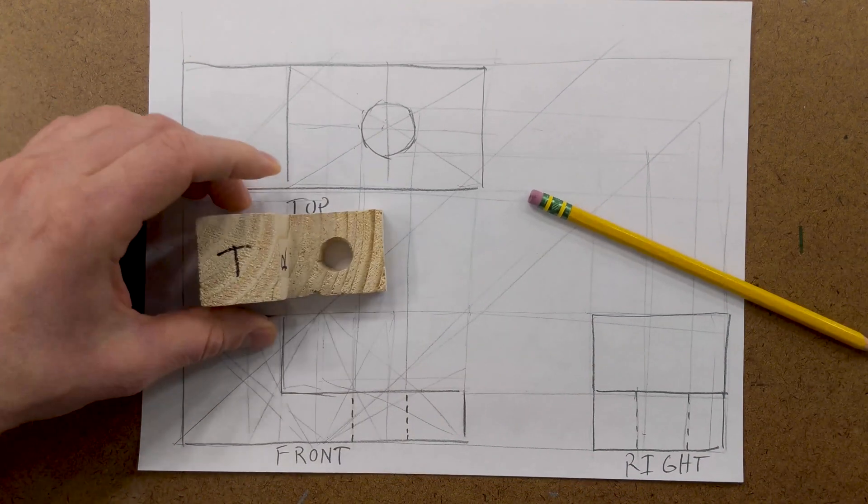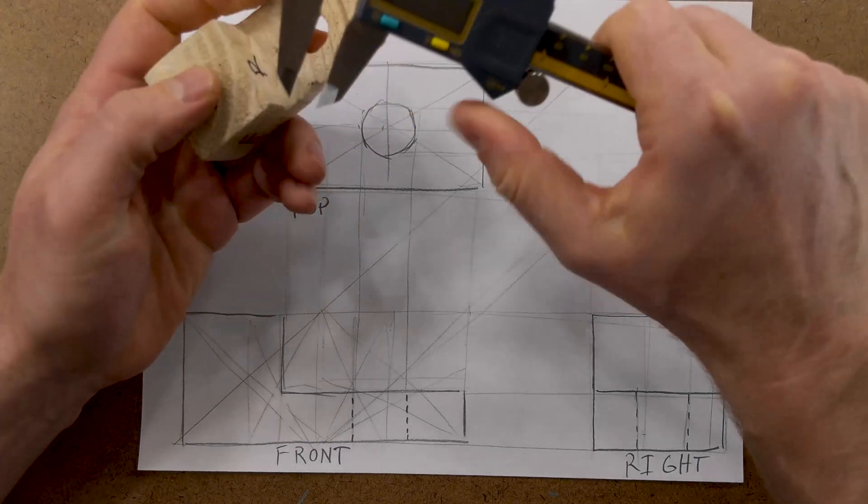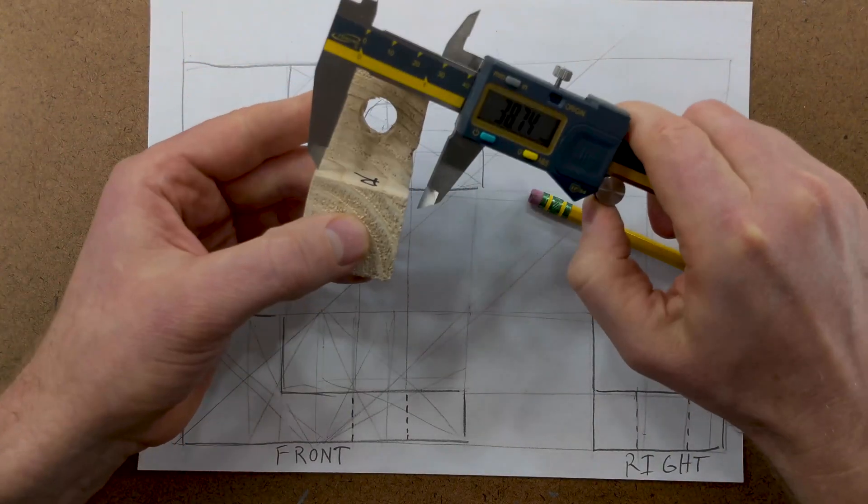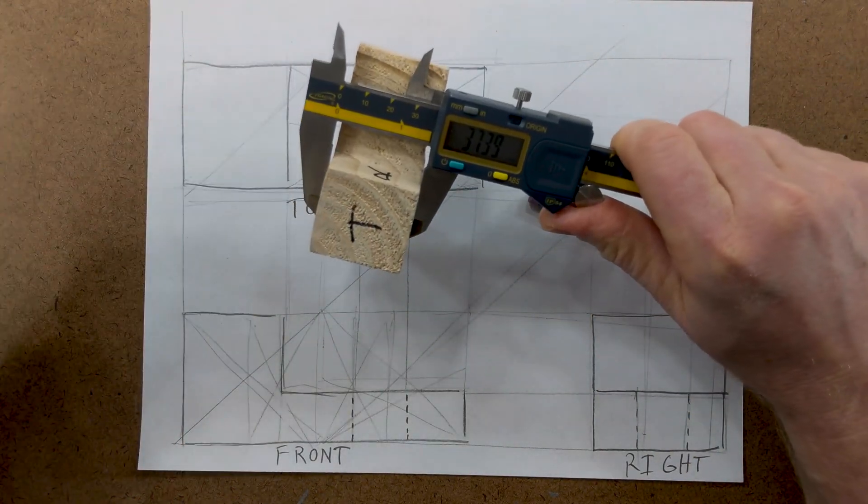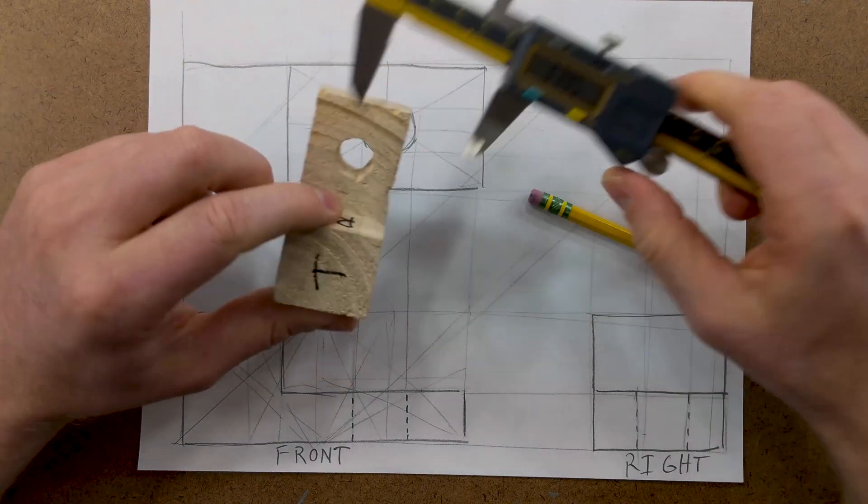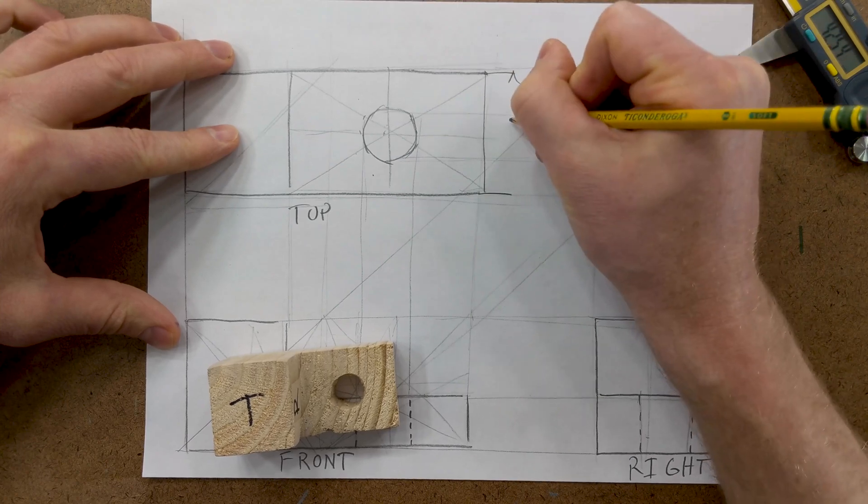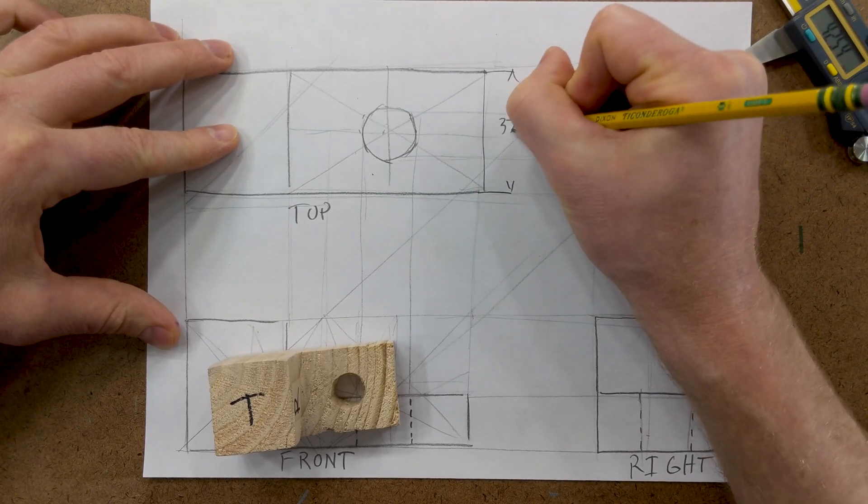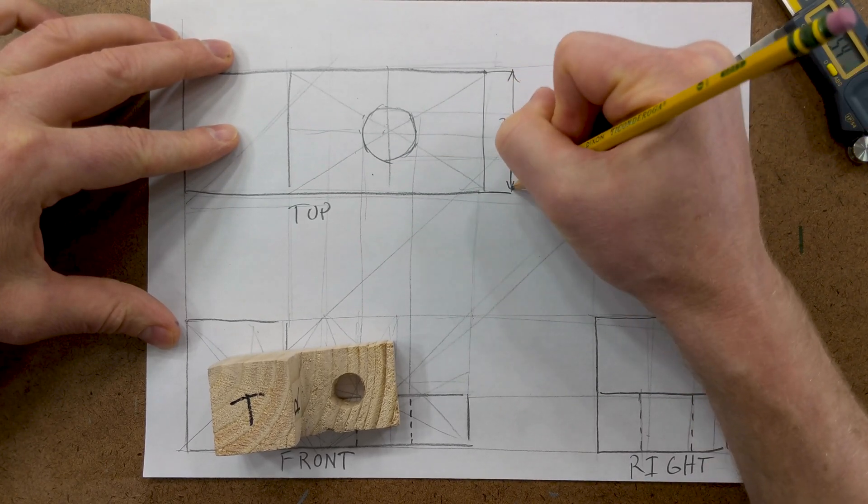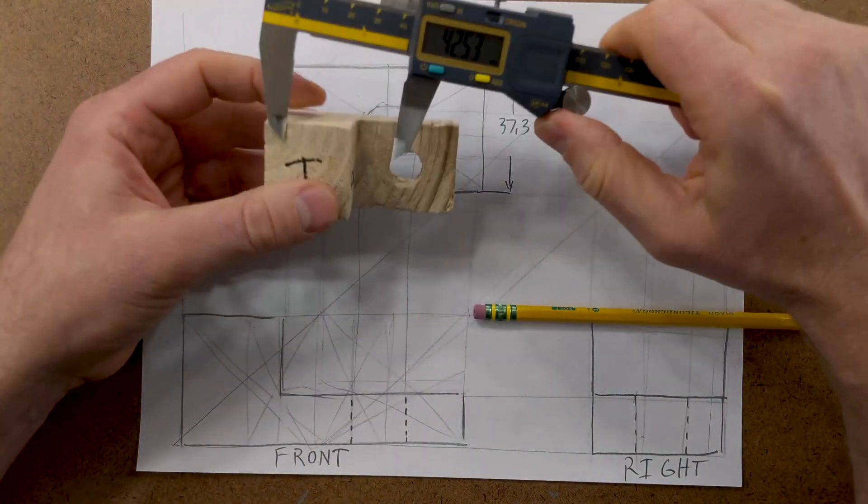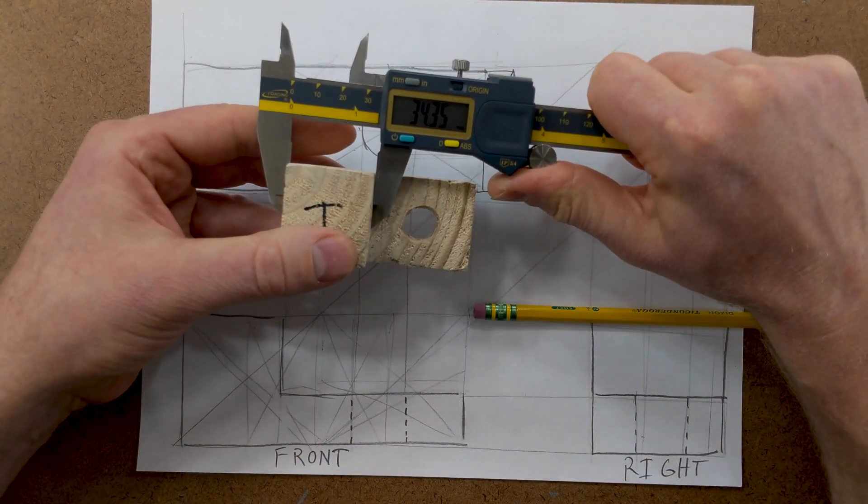And let's add some dimensions to this. So we can easily do that with our calipers. So our one unit is about 37.3, so let's go ahead and put that right here. We need to know this dimension, we'll call that 34.